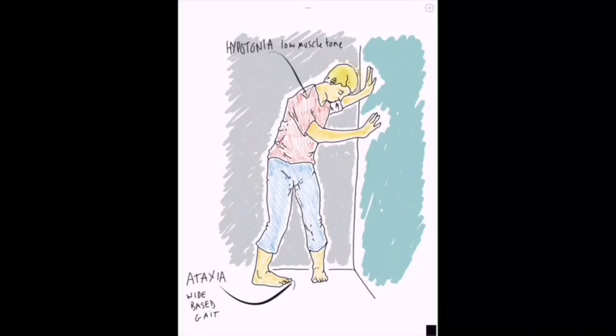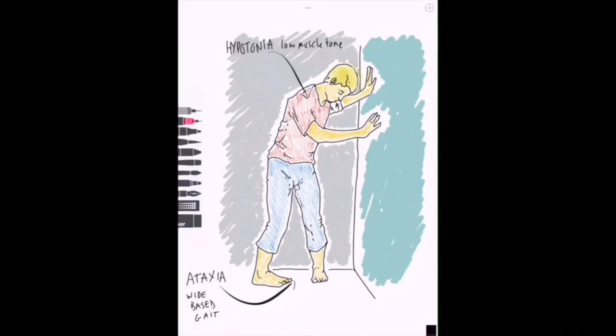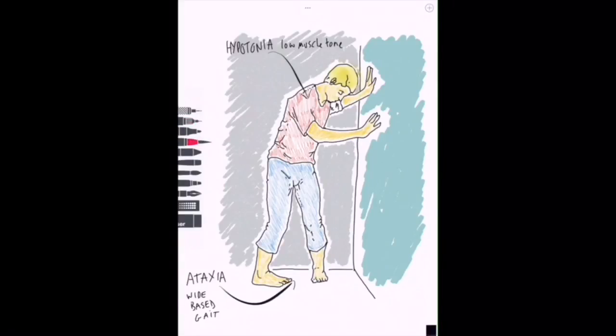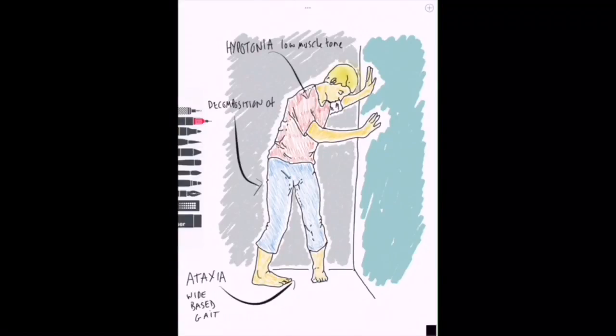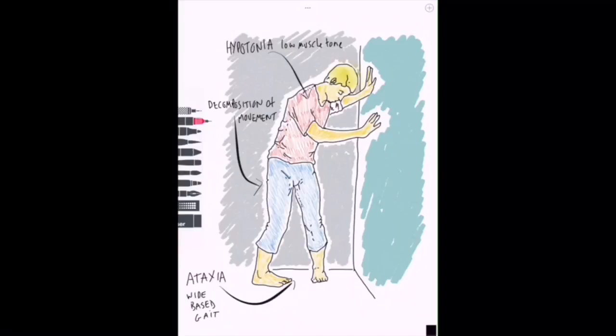Next up is ataxia. This is abnormal gait and therefore the patient will stagger around and walk with their feet wide apart to keep their balance and compensate. Remember there's two types: cerebellar ataxia and sensory ataxia. Sensory ataxia is associated with problems with the dorsal column medial lemniscal pathway, not the cerebellum, so worth remembering.